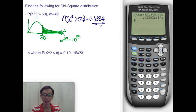Now for the reverse problem: we want to find the particular value such that when chi-square is greater than that value, we have a probability of 0.10.